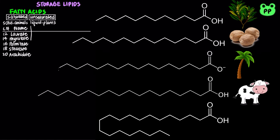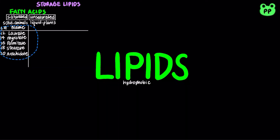A 20-carbon saturated fatty acid is known as arachidic acid, which is found in corn oil, cocoa butter, and durians.